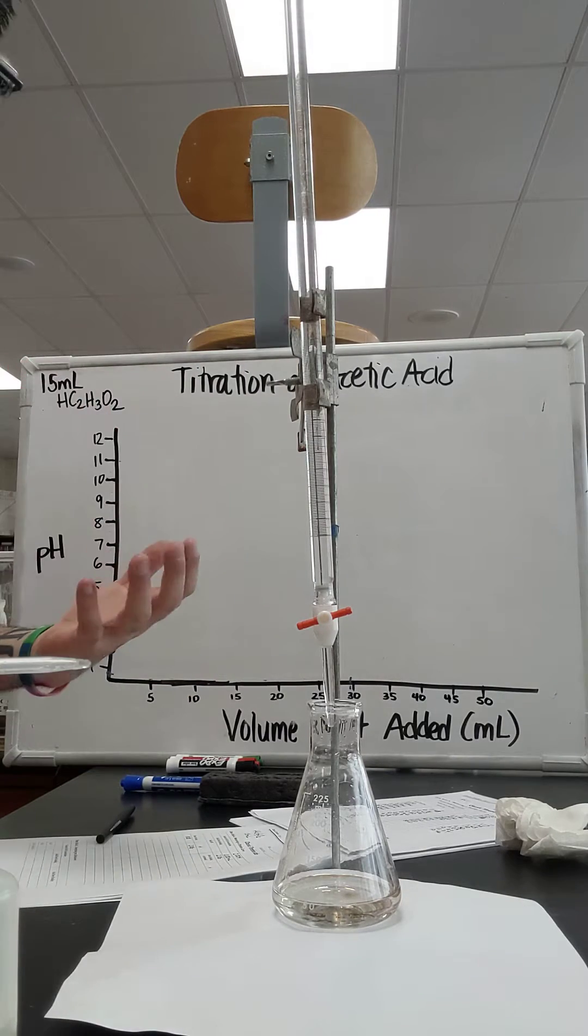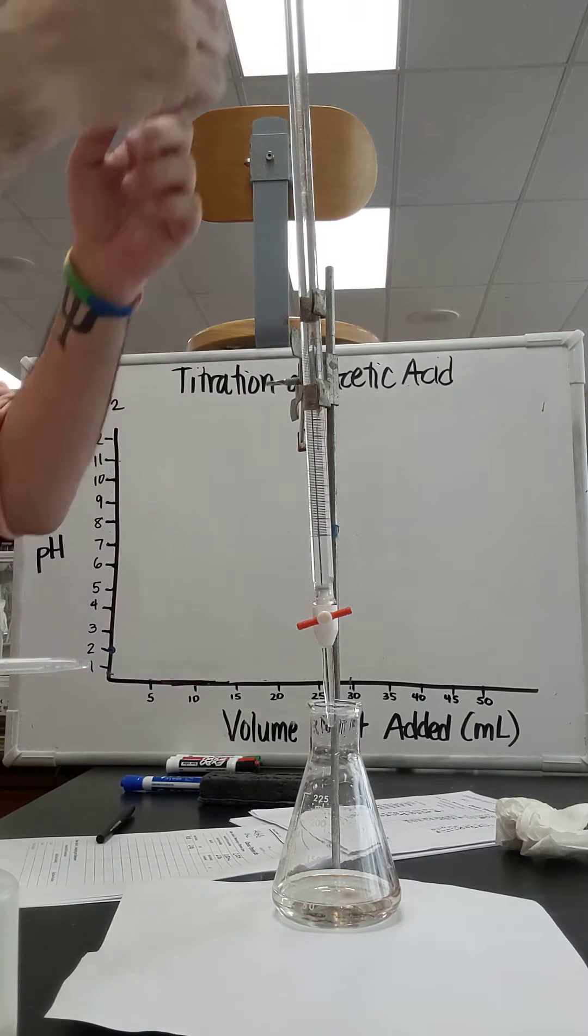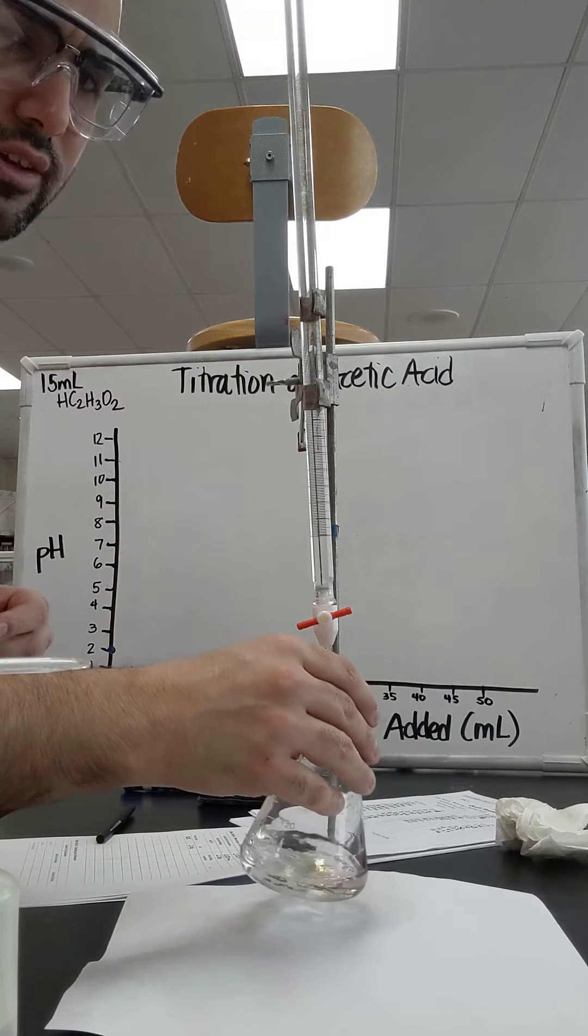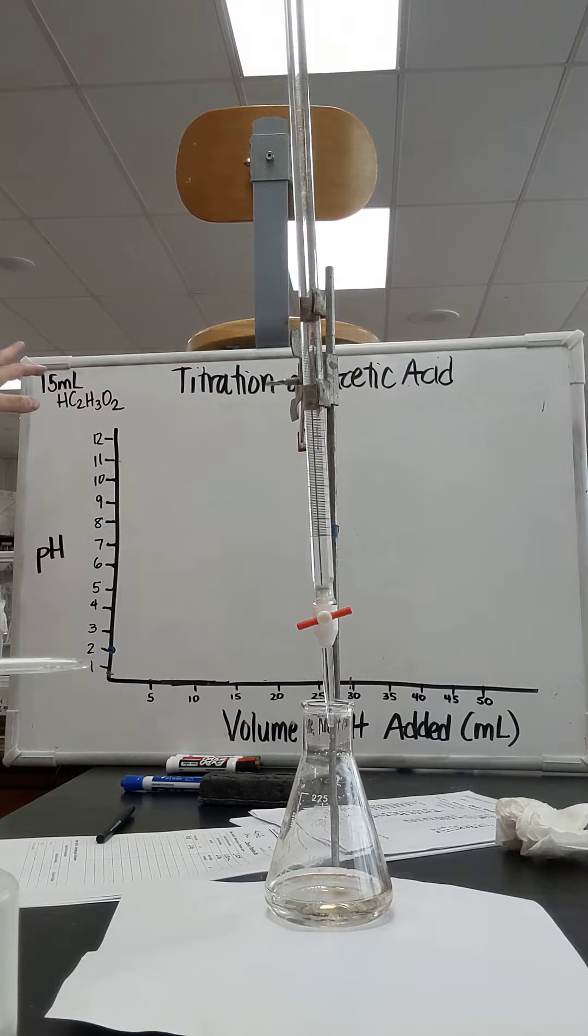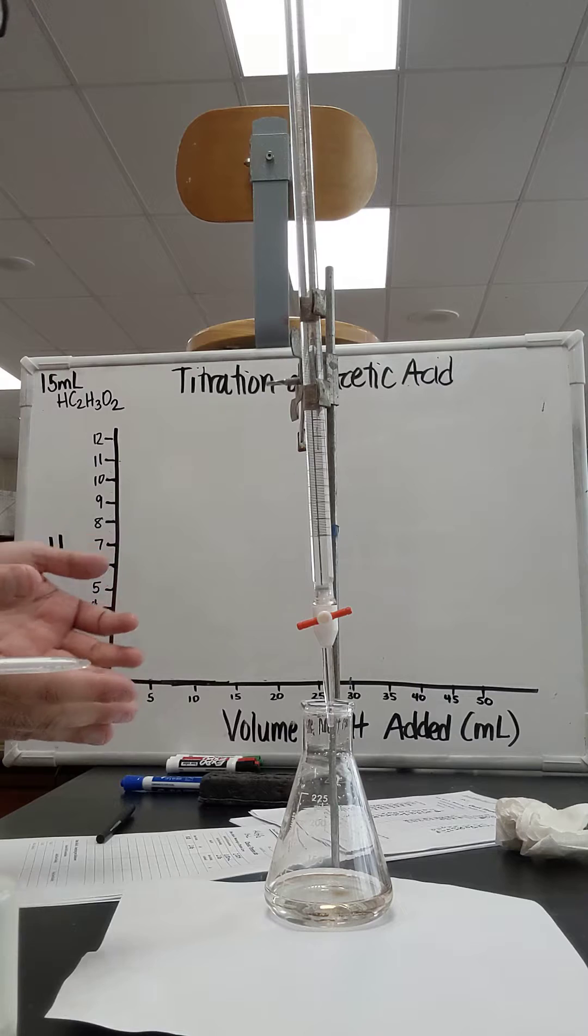Alright, hey AP Chemistry. Now I'm doing a titration of acetic acid in here, which is a weak acid, with 2 molar sodium hydroxide. I don't know the concentration of acetic acid, but you could use titrations to figure that out.